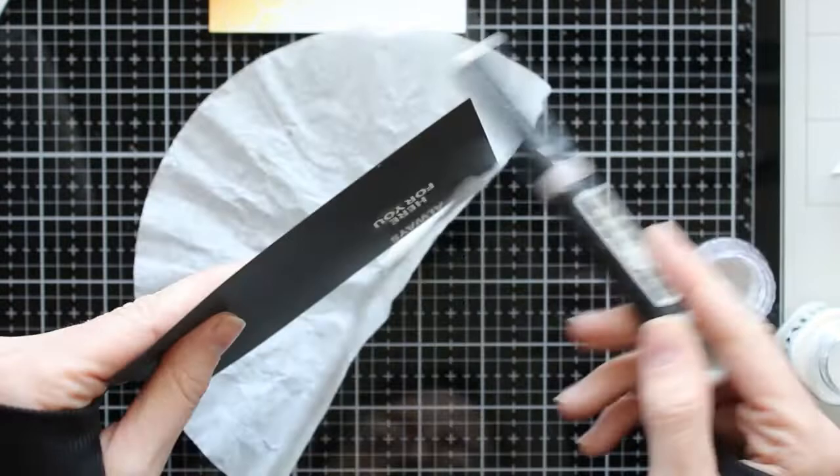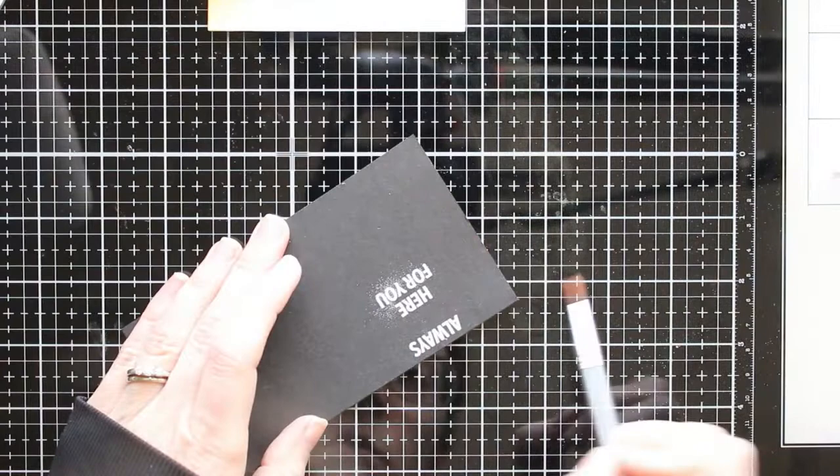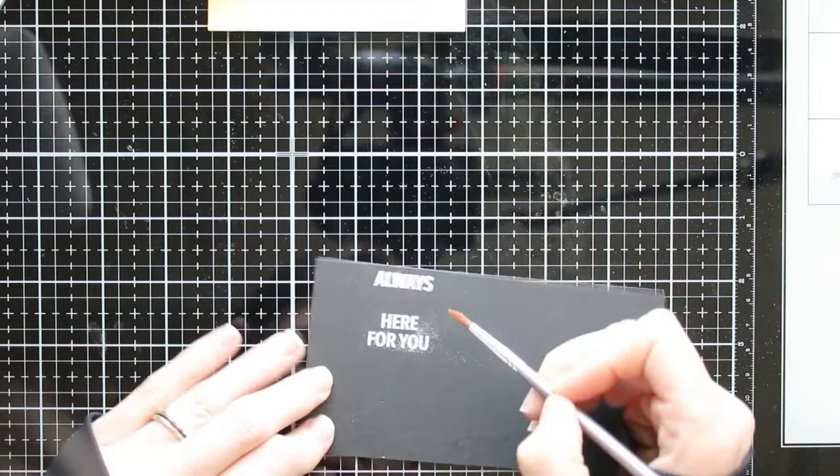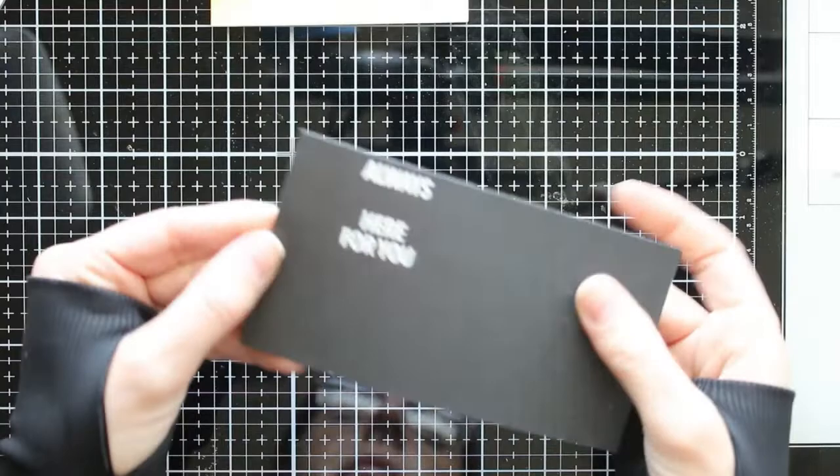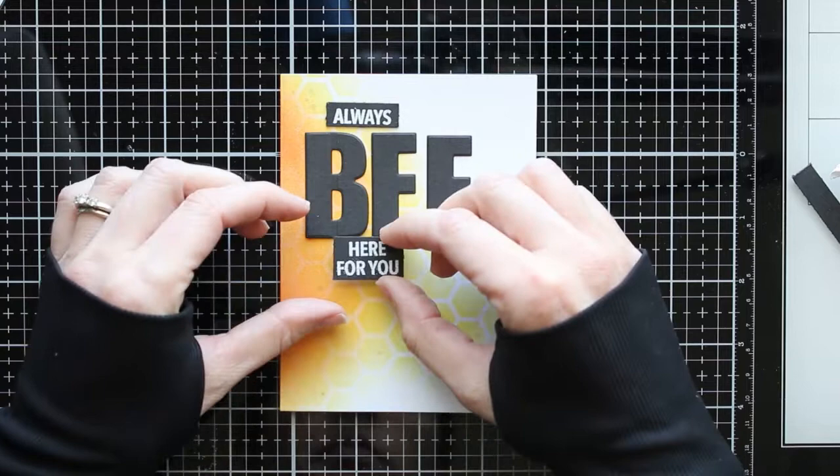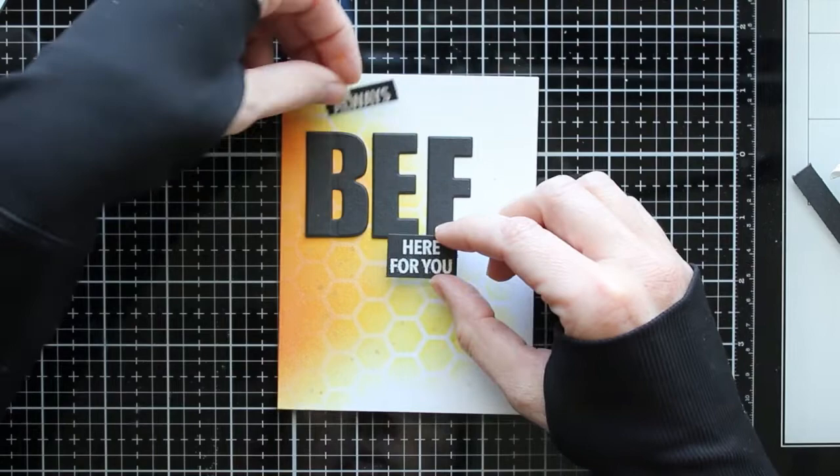So I'm embossing these sentiments in white so I've gone ahead and stamped them out with some VersaMark ink and then I sprinkled on some white embossing powder. Now I'm using a brush to brush away some of that embossing powder that stuck around my sentiment where I didn't want it and then once I had that cleaned up I went ahead and hit it with my heat tool and I embossed those sentiments. So now I have a raised embossed sentiment on my little cardstock here and I'm kind of trying to eyeball where I want this sentiment to go.